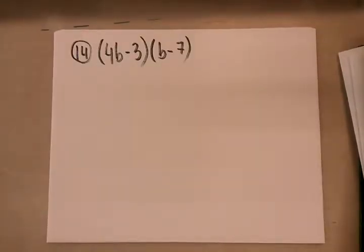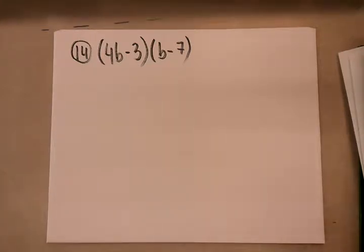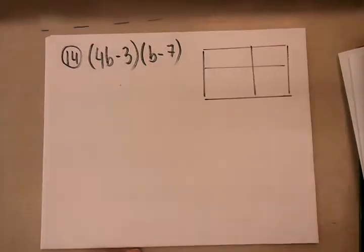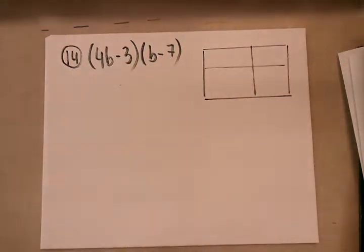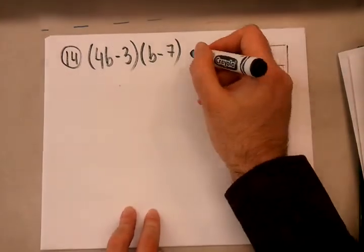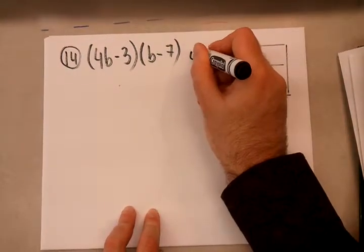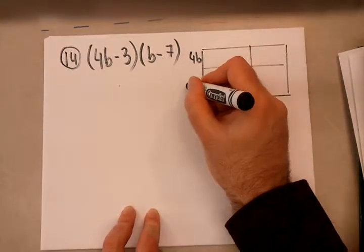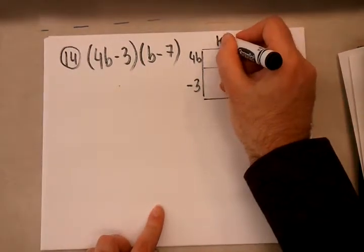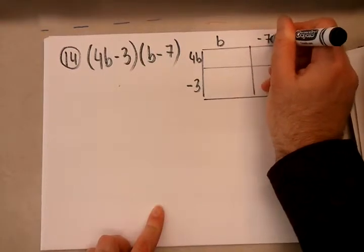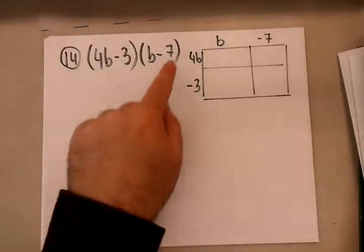For number 14, they ask us to use the table method — not the FOIL method, specifically the table method. So I'm going to create a table and populate it. I'll write the first polynomial on the left side and the second polynomial on the top. The highest degree monomial goes first: 4b. Then the lower degree monomial, the negative 3. Here the b goes first as it's higher degree, and then the negative 7 goes afterwards.